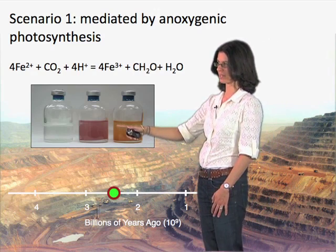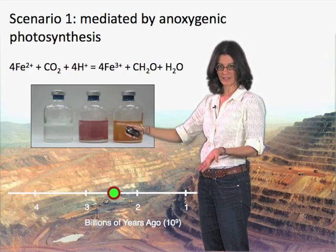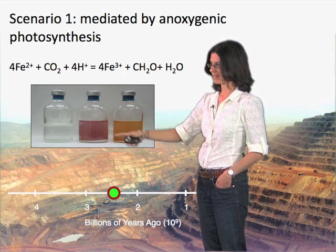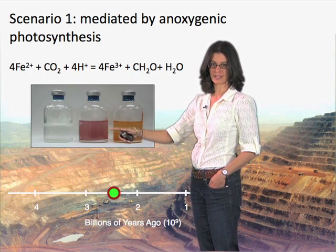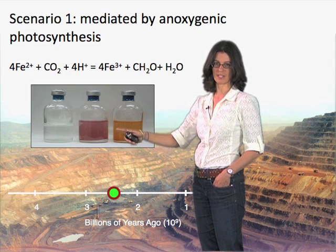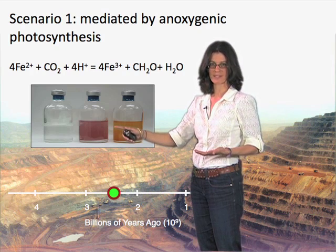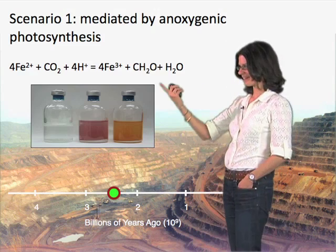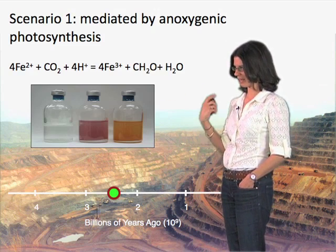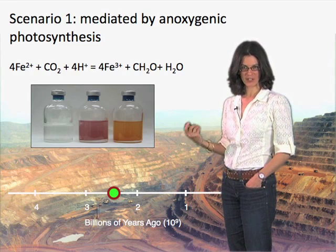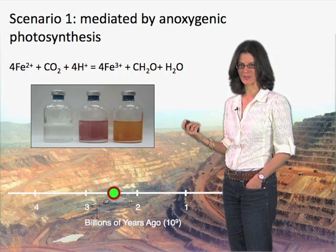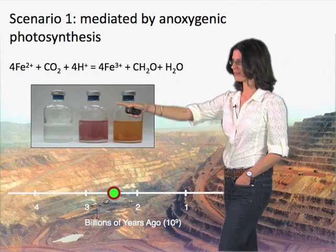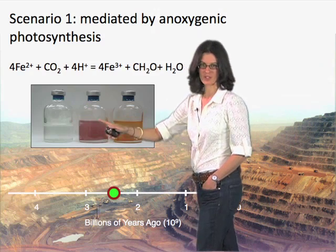Now in the middle, you see these organisms growing on a different electron donor — in this case they're utilizing hydrogen as an electron donor, and the pink color you see is due to photosynthetic pigments in their membranes that enable them to harvest light and grow in this way. This scenario is one catalyzed by organisms that do not generate oxygen — they're anoxygenic phototrophs capable of oxidizing iron in a photosynthetically mediated process under environments where no oxygen is present whatsoever.